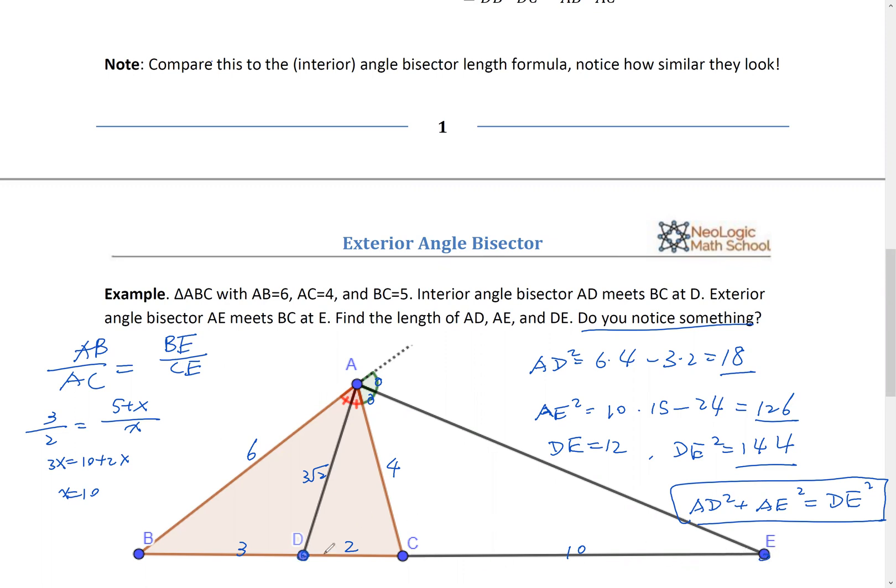But that's the Pythagorean. No, this is saying the triangle ADE is a right triangle. Is a right triangle. Right. Okay. Well, is that, is that so? Is that correct? Why is that? Well, it's correct. Right. Because this angle right here is 90 degree. Why? Because this is interior bisector. That's exterior bisector.